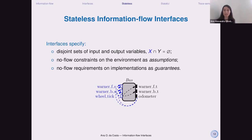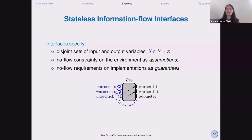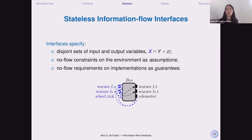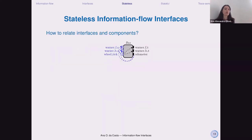We'll start with the stateless case. Stateless means the specification does not change through time — stateless with respect to the specification. We have joint sets of input and output variables, X and Y. We have no-flow constraints on the environment, which we call assumptions shown in blue, and these point to input variables. We have no-flow requirements on implementations, called guarantees, which point to output variables, and they are inside the interface.